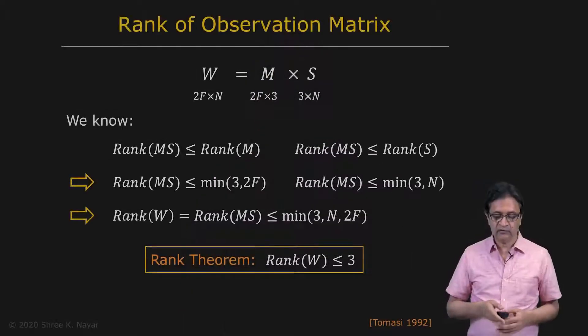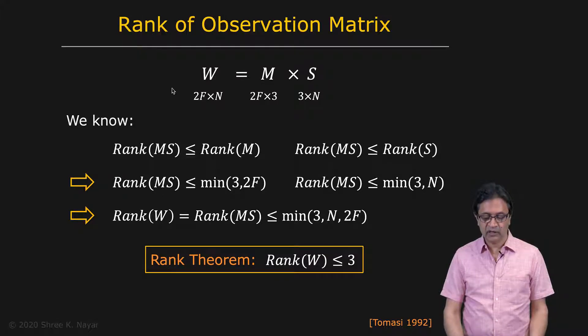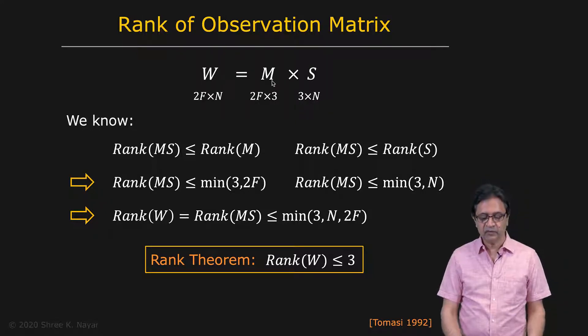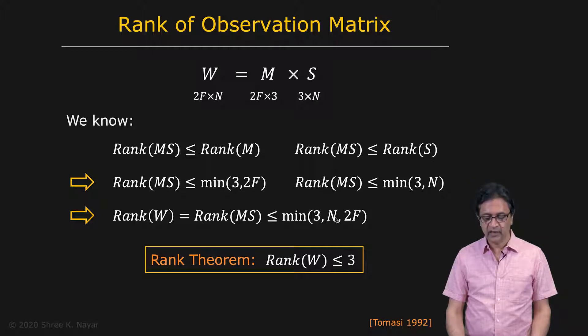This algorithm is based on the properties of the observation matrix W — in particular, the rank of the observation matrix. We know that W is the product of the motion matrix M, which is a 2F by 3 matrix, and the structure matrix S, which is a 3 by N matrix. From the properties of ranks of matrices, the rank of W must be less than or equal to the minimum of 3, N, and 2F — the dimensions of M and S.